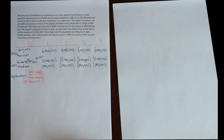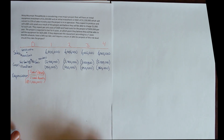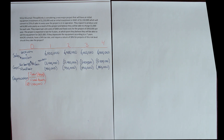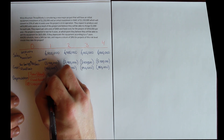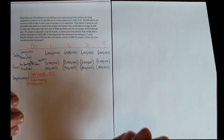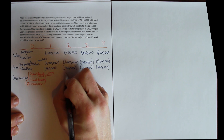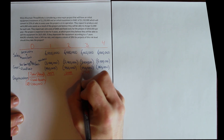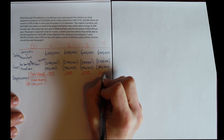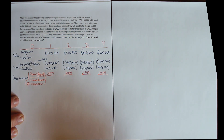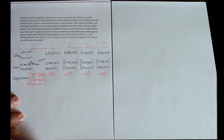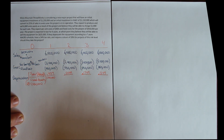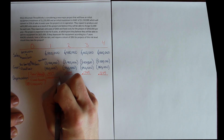The MACRS schedule is always provided — it's not something you memorize; it changes occasionally, so we look it up on the IRS website. The seven-year MACRS schedule starts with 14.29% in year one, 24.49% in year two, 17.49% in year three, and 12.49% in year four. Using MACRS depreciation means we multiply the cost basis of $1.25 million by the depreciation percentage each year.